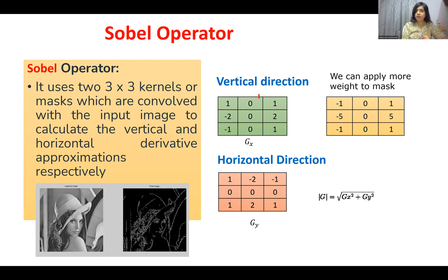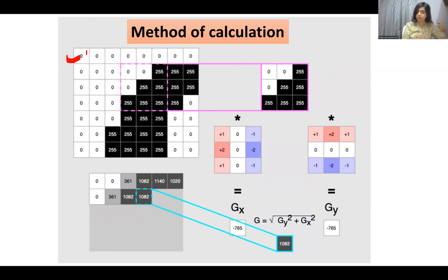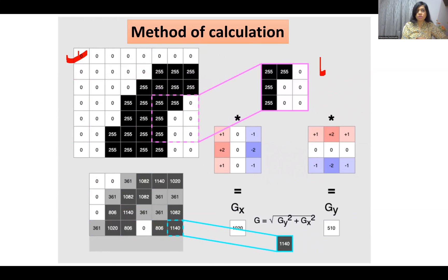First, the Sobel operator. In the Sobel operator there are two masks: one in the vertical direction called Gx, and one in the horizontal direction called Gy. To get the output we use the formula: G = √(Gx² + Gy²). It is not necessary that the values of this mask always remain fixed — you can add more weight to the mask, meaning you can change these values to enhance the quality of edge detection, but the basic structure remains the same.